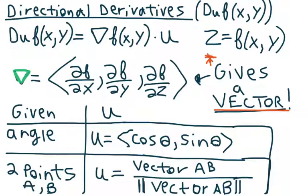To calculate the directional derivative, we're going to do the gradient times a unit vector u. The unit vector can be found two ways. If we are given an angle, we plug in cos of that angle as the x component and sin of that angle as the y component. If we are given two points a and b, we find the vector of those two points, the magnitude of that vector, and simply divide the vector by that magnitude — that gives us our unit vector u.